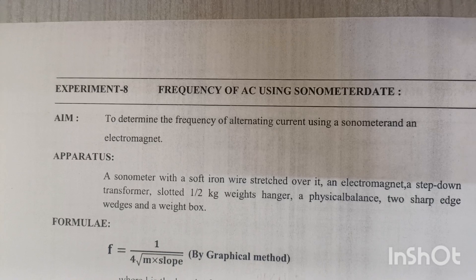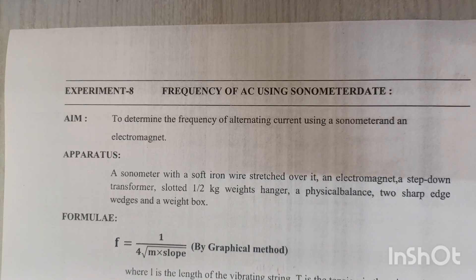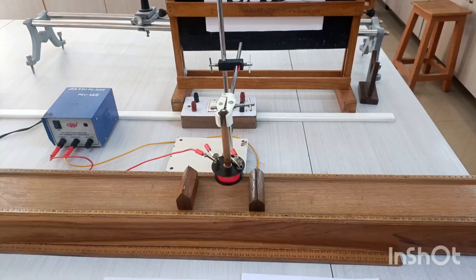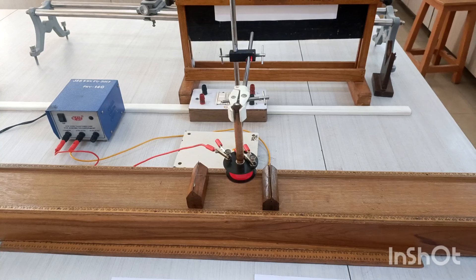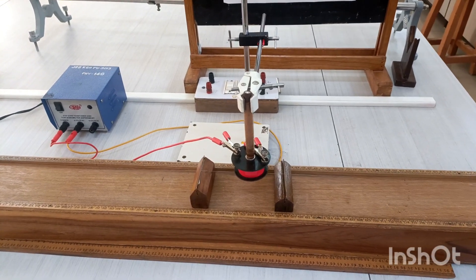The aim is to determine the frequency of alternating current using a sonometer and an electromagnet. The experimental setup is shown here.